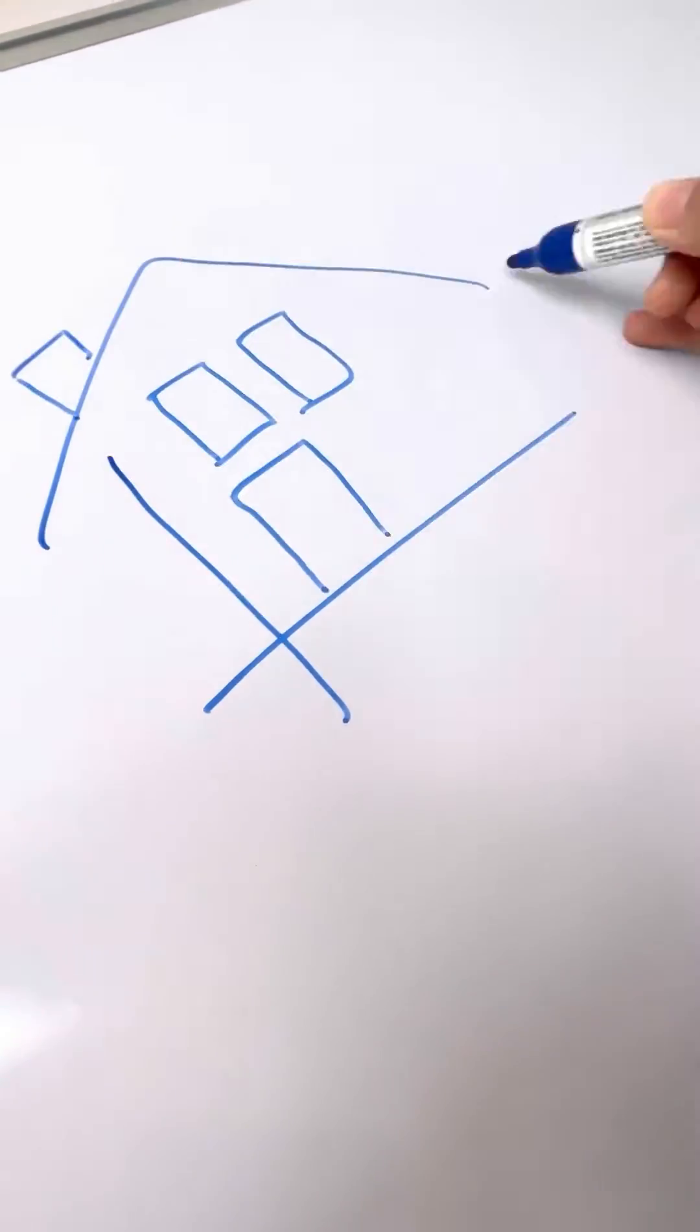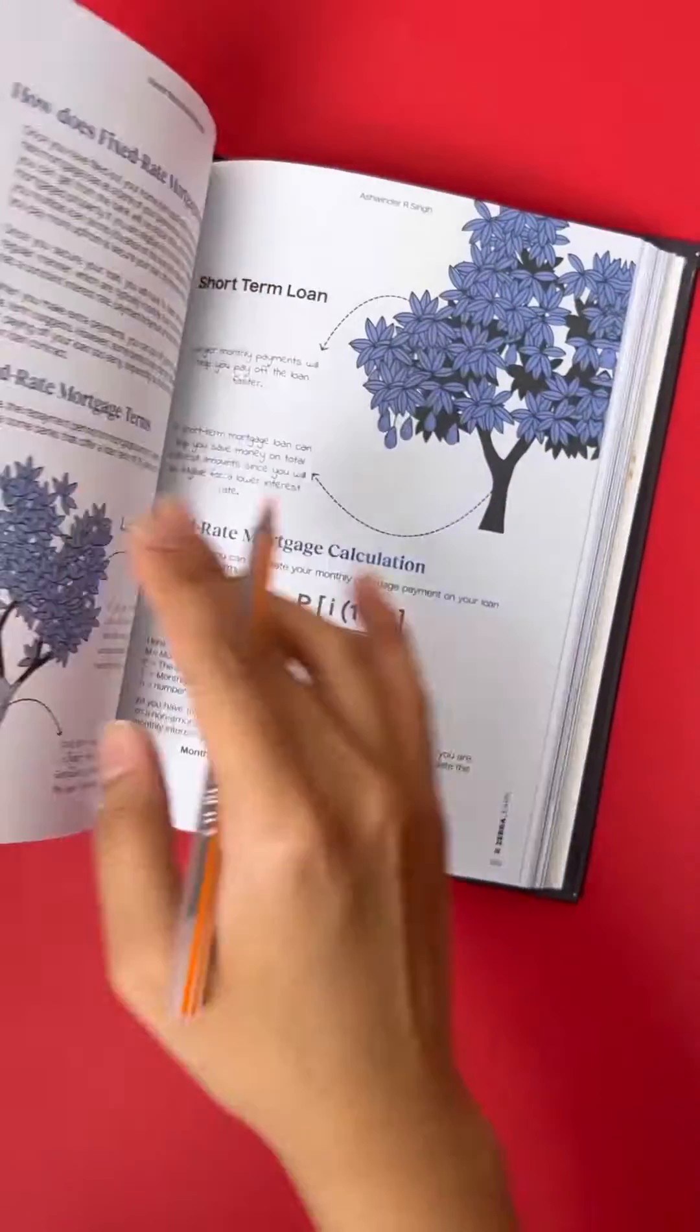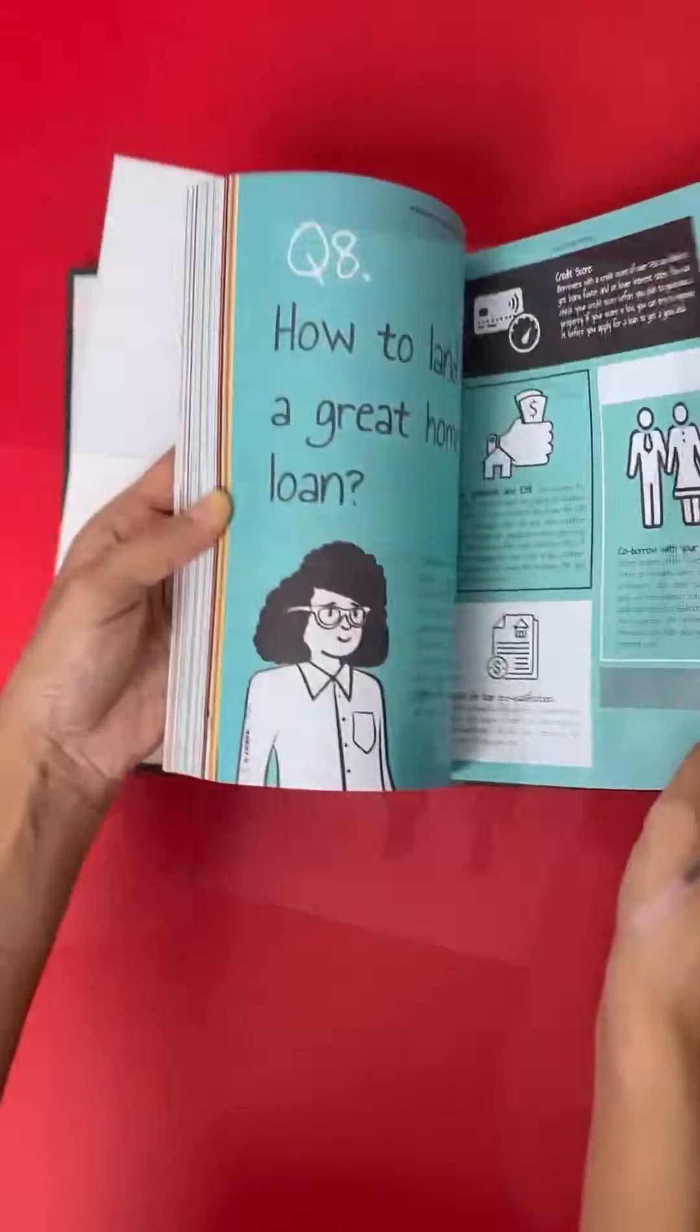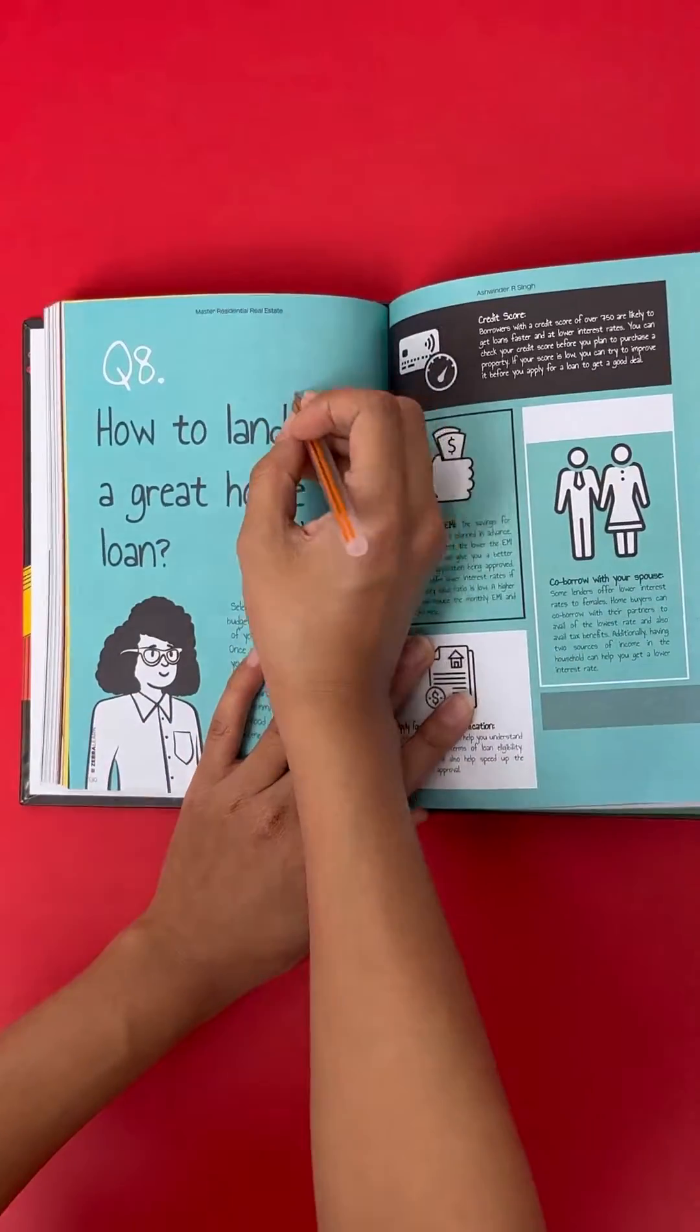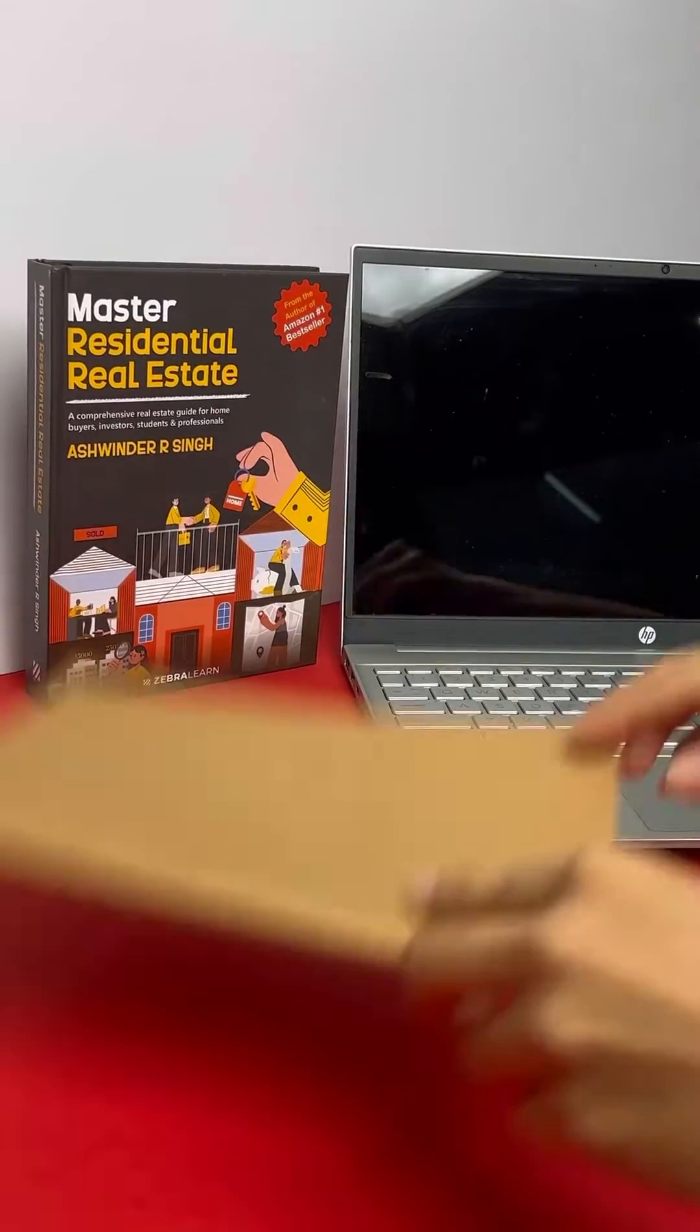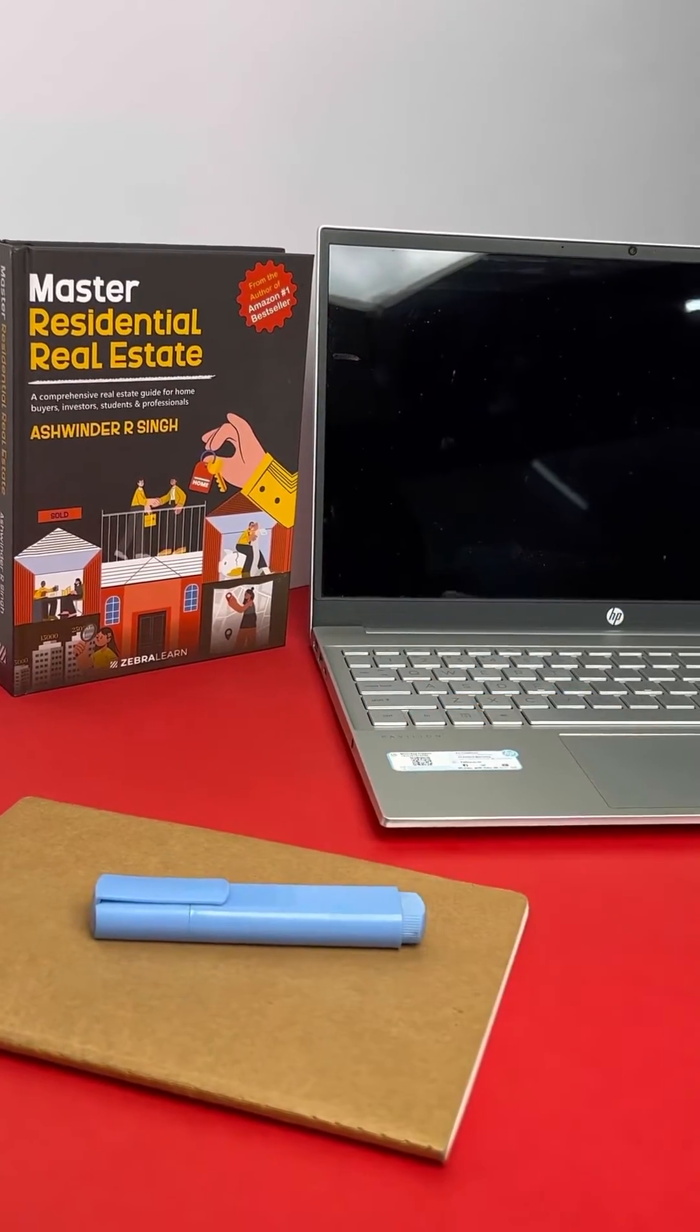Home loan le na koi pahaad chadne se kam to hai nahi, but I came across a few tips to obtain a home loan when I was flipping through the pages of Master Residential Estate by Ashwinder Singh. So, I took out my book and pen to obtain a home loan for myself.